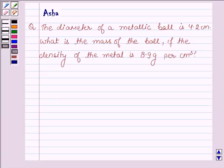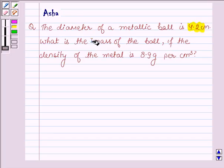Hello and welcome to the session. The question says, the diameter of a metallic ball is 4.2 cm. What is the mass of the ball if the density of the metal is 8.9 grams per cm³?